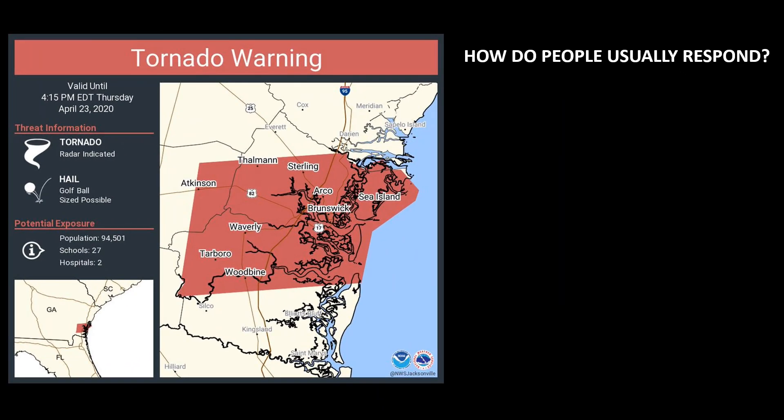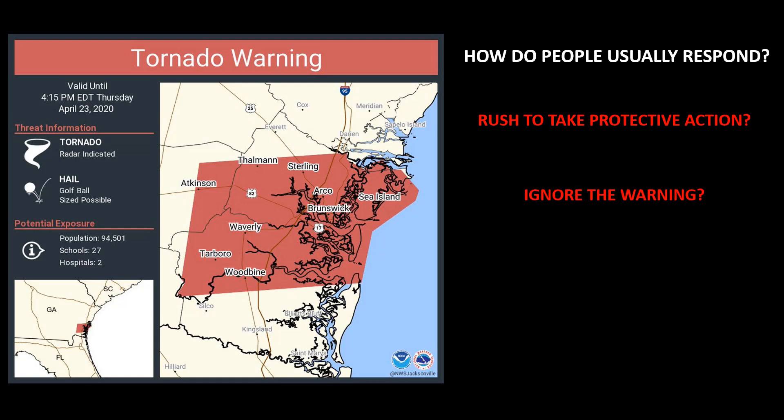When a warning is received by the public, like this tornado warning example, how do people respond? Do they rush to take cover, or do they ignore the warning? Due to the high false alarm rate with warnings, people tend to ignore them over time, at least until it gets bad outside.